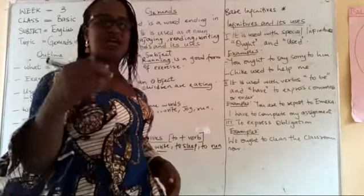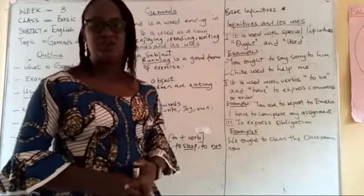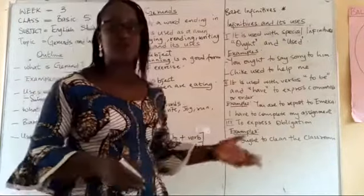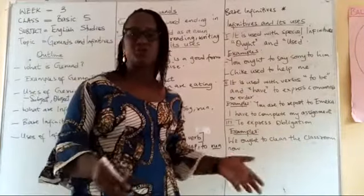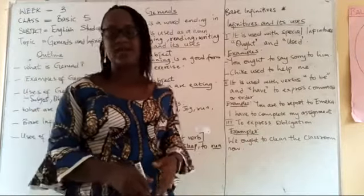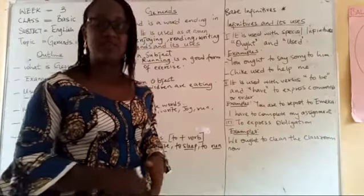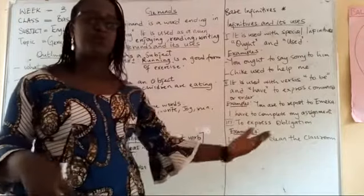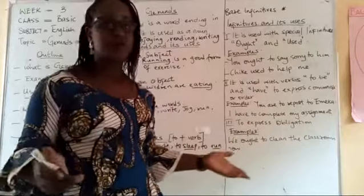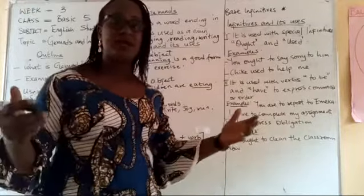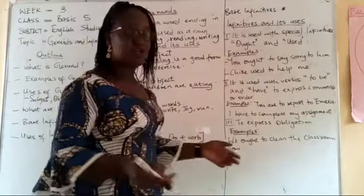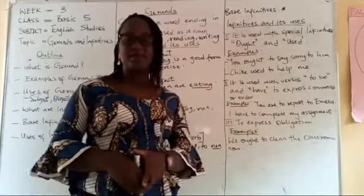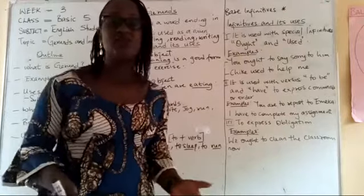When mommy gives commands: 'You have to be good. You have to be obedient.' These are the various uses of your infinitives. For example: 'You have to report to your teacher in case of any misconduct. You have to report to mommy and daddy when there is a stranger around.' These are commands — giving you orders of what you have to do. 'How to complete my assignment — I have to teach my pupils.'